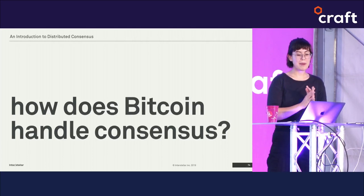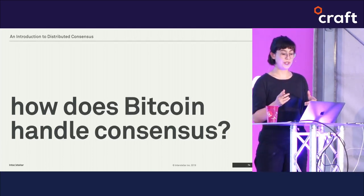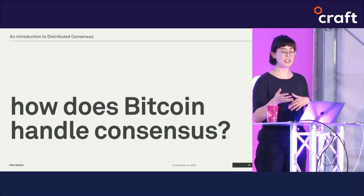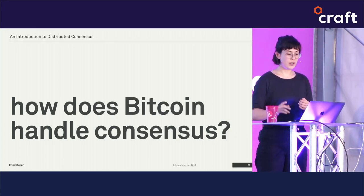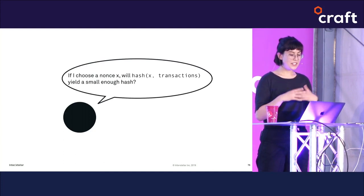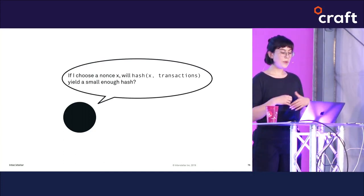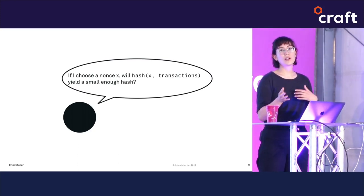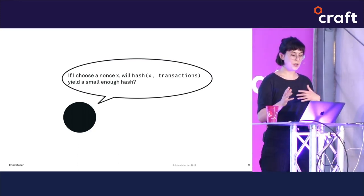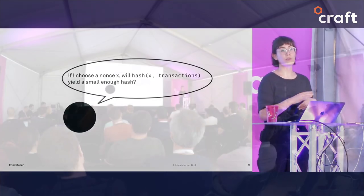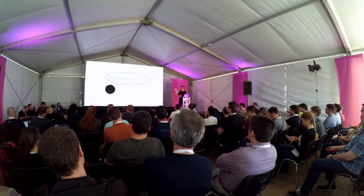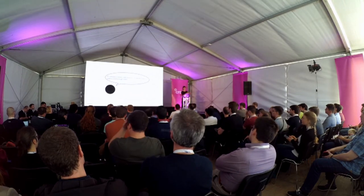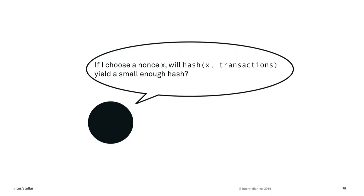Since we're talking about blockchains, let's look at the oldest one: how does Bitcoin handle consensus? Bitcoin uses Nakamoto consensus, which relies on proof of work. In Nakamoto consensus, every validator node composes a new candidate block from all of the pending transactions. The node then attempts to guess a nonce that, when combined with the block contents, can be hashed to produce a value that's smaller than some threshold.